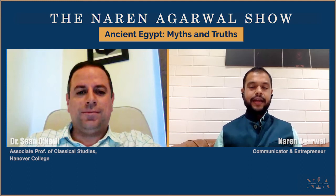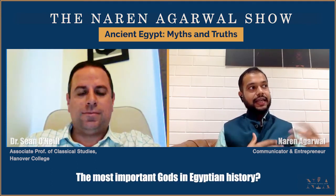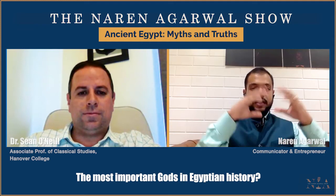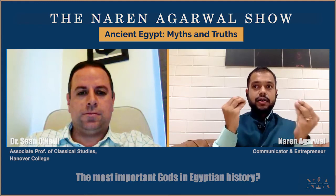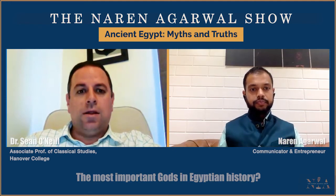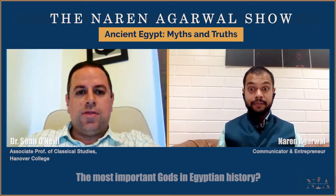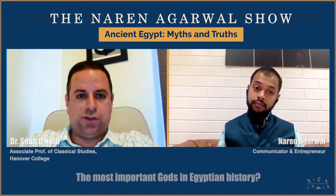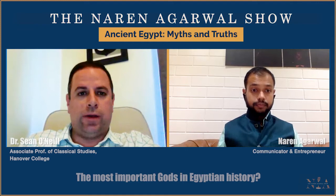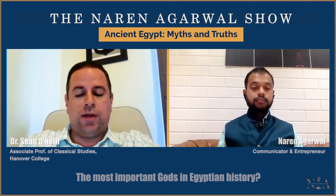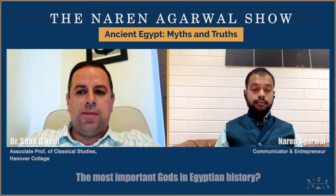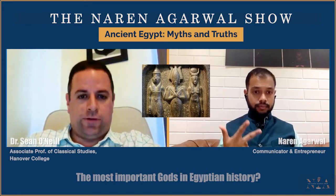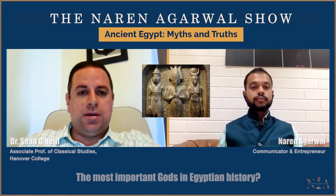Who are some of the most important gods? In the ancient Vedic understanding, there are multiple gods but some more important than others. For Egypt, who are the more important gods and what do they control? For most of Egypt's religious history, the divine family triad of Osiris, Isis, and Horus would be the prime deities in the Egyptian religious sphere.